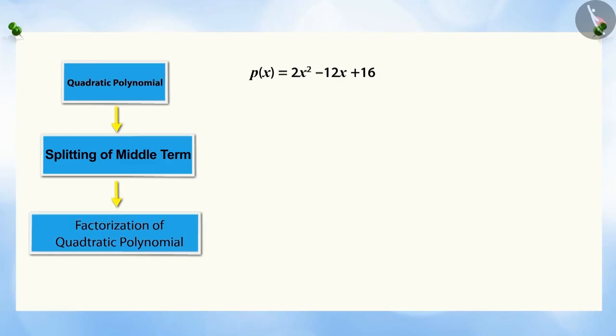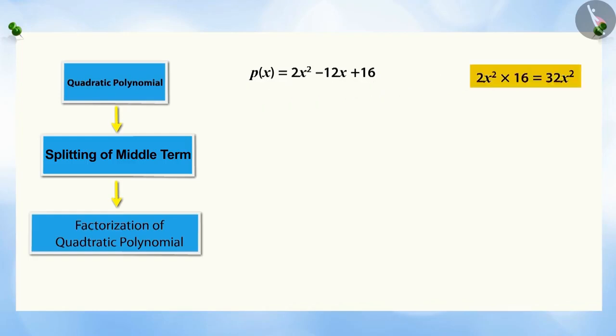For example, the polynomial is 2X squared minus 12X plus 16. The term minus 12X is written as the sum of two such terms whose product is 32X squared. On further solving, we get the factors of this polynomial.